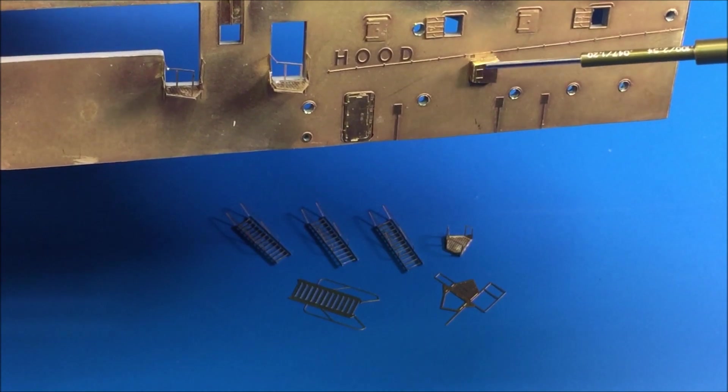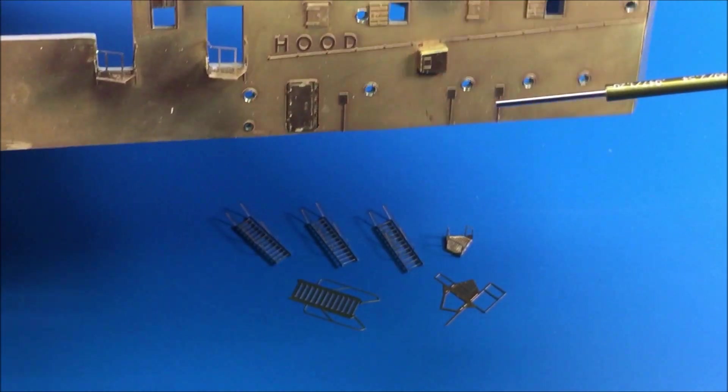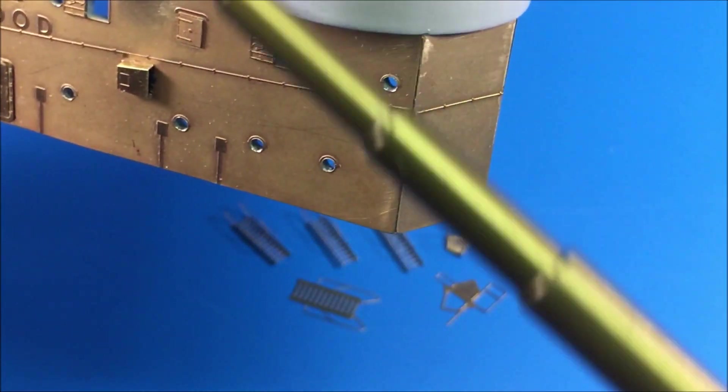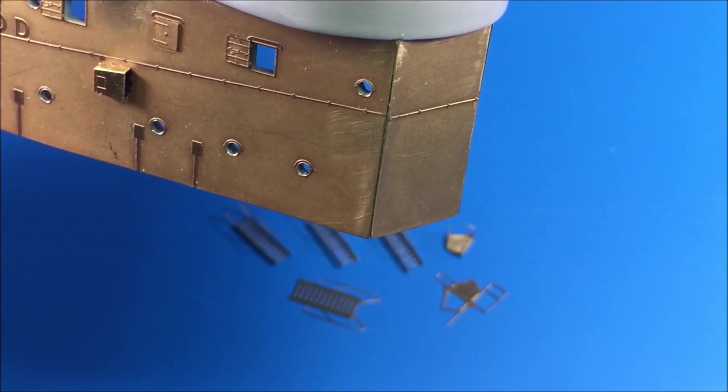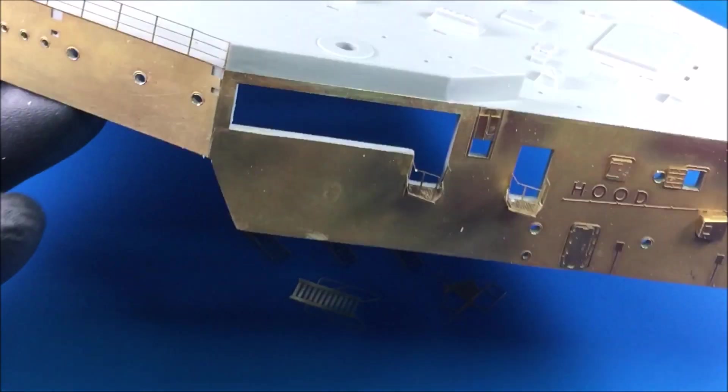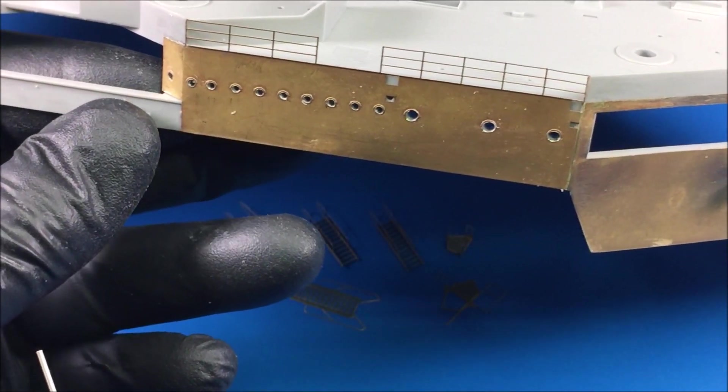This vent here I think was in plastic as well, so the profile is just a little thinner in photo etch. It just adds a little more realism, and then of course there's the handrails on the side which add to the realism as well.